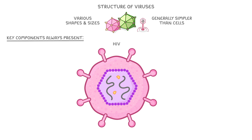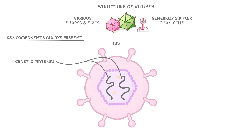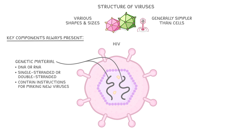First, viruses contain genetic material which could either be DNA or RNA, and that DNA or RNA can be either single-stranded or double-stranded. For instance, this HIV virus has two single strands of RNA, and they contain the instructions for making new viruses.